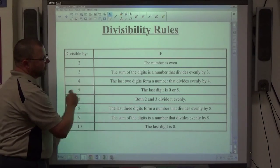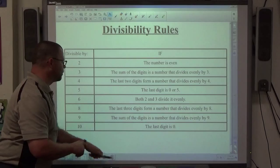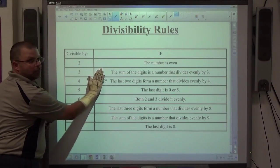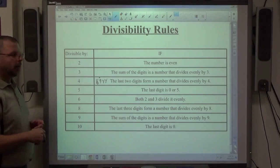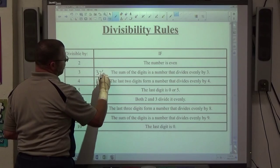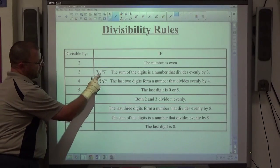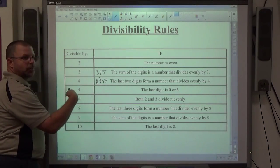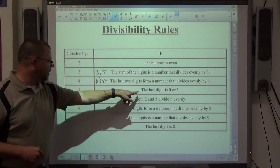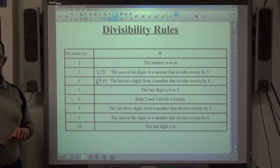If the last two digits form a number that divides evenly by 4, for example 8,944, the last two digits are 44, that divides by 4 so the whole thing does. Here's an example, 375, 3 plus 7 plus 5 is 15, divides by 3, so 375 divides by 3. Last digits 0 or 5 for 5, I think that was pretty obvious for everybody.